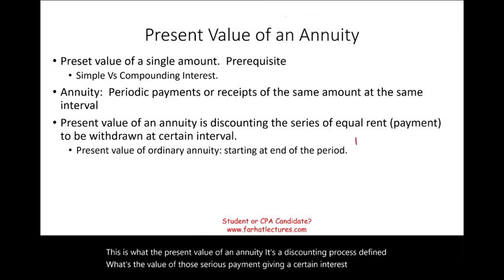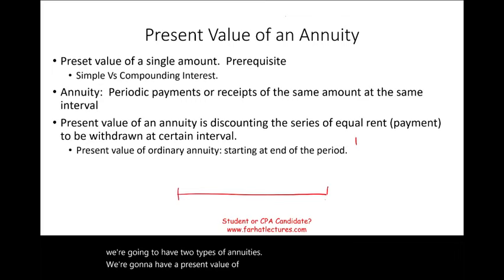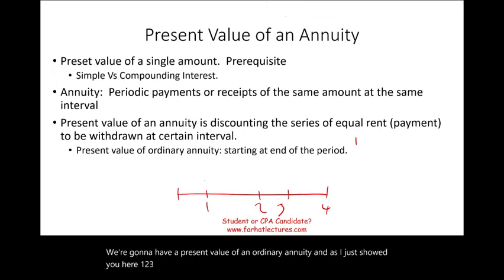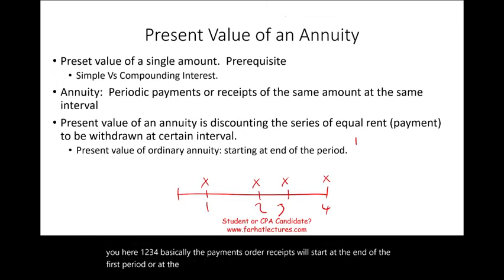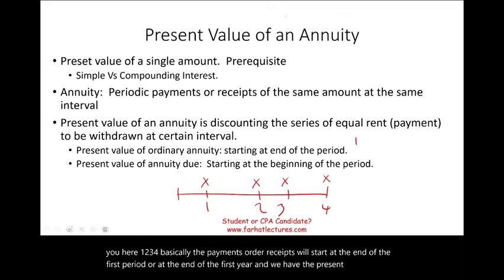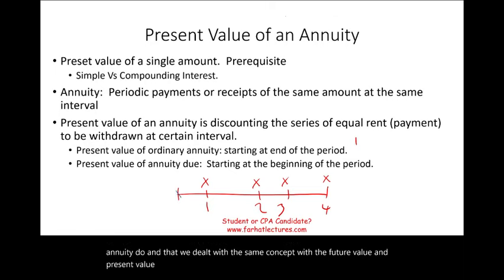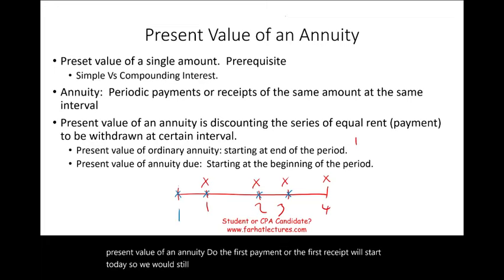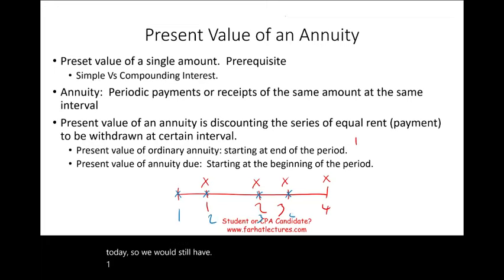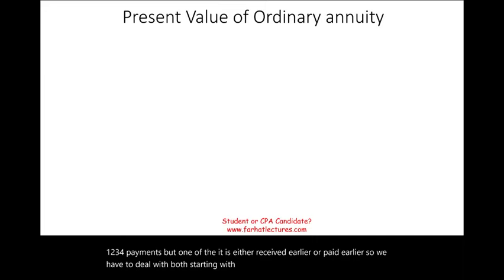We're going to have two types of annuities. The present value of an ordinary annuity has payments or receipts starting at the end of the first period — year 1, 2, 3, 4. And we have the present value of an annuity due, where the first payment or receipt starts today. So we still have 1, 2, 3, 4 payments, but one payment is either received or paid earlier. We'll start with the present value of an ordinary annuity.